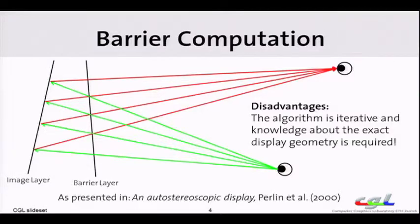Now there are two slight disadvantages. First of all, you need to know the exact display geometry, so you need to know how these two layers stand to each other. You also need to know the eye position, but this will always be for any approach. The second disadvantage is that this is an iteration, so you need to know the previous barrier position to compute the next one.